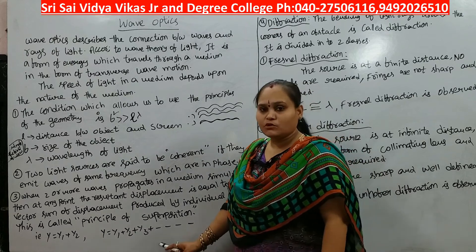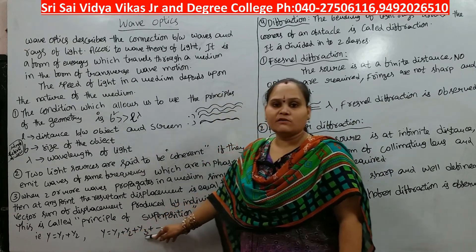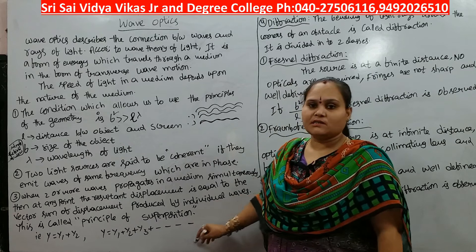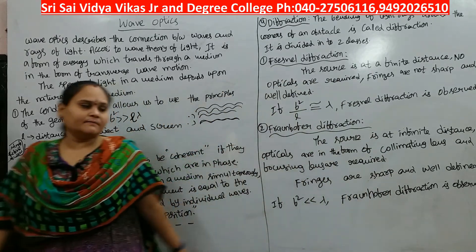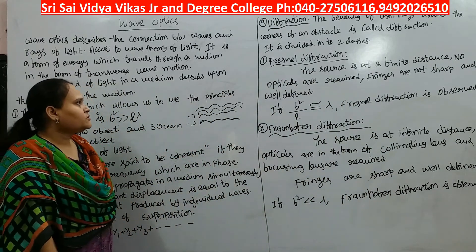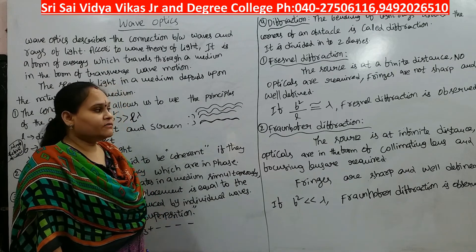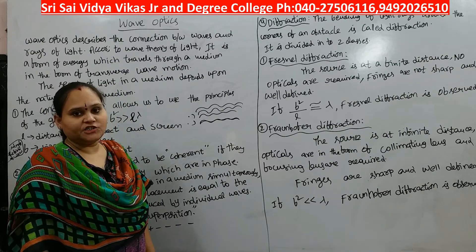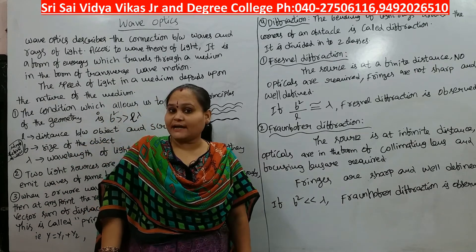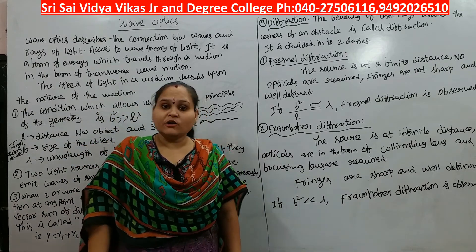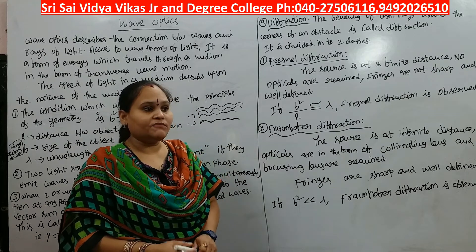Similarly, considering more than two waves, the resultant displacement is y = y1 + y2 + ... + yn for n waves. The next topic is diffraction — here we observe what is meant by diffraction.